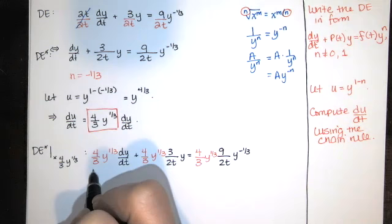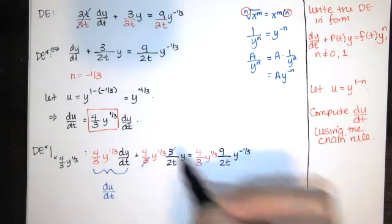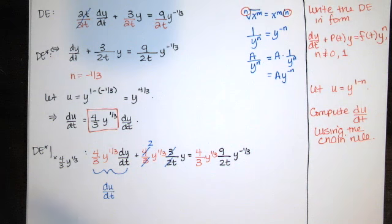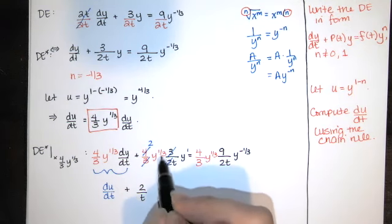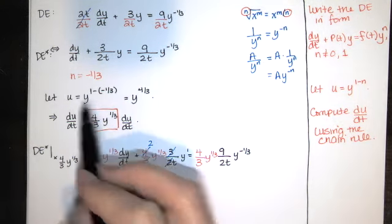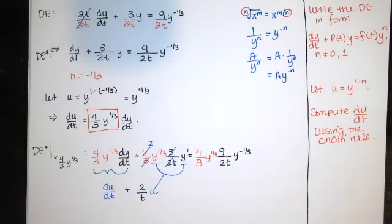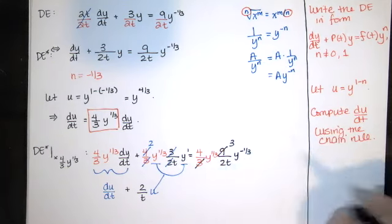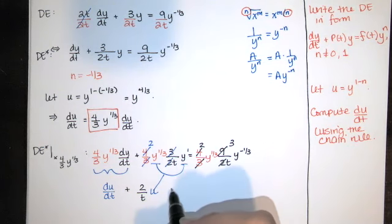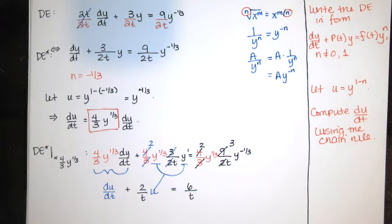By design, this is du/dt. We can simplify a little bit: the threes reduce, two goes into four twice, and so we end up with 2 divided by t. Then y to the one-third times y to the first — you add the exponents — that's y to the four-thirds, and that's what u is. So these two pieces together give us our u. On the right-hand side, three goes into nine three times, two goes into four twice, so we end up with a six in the numerator divided by t. And the y to the negative one-third and the y to the one-third, when you add the exponents, you get y to the zero, which is one.